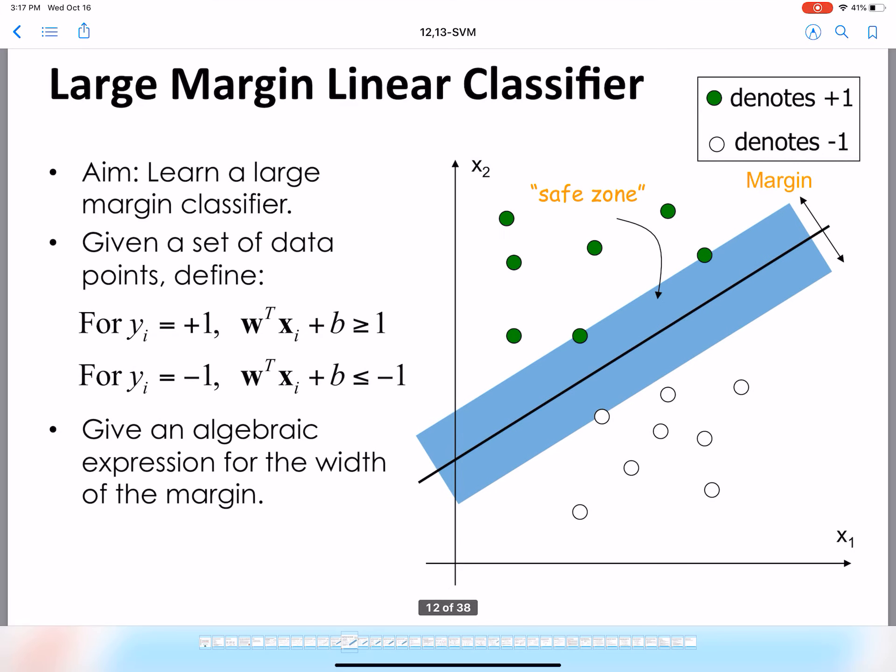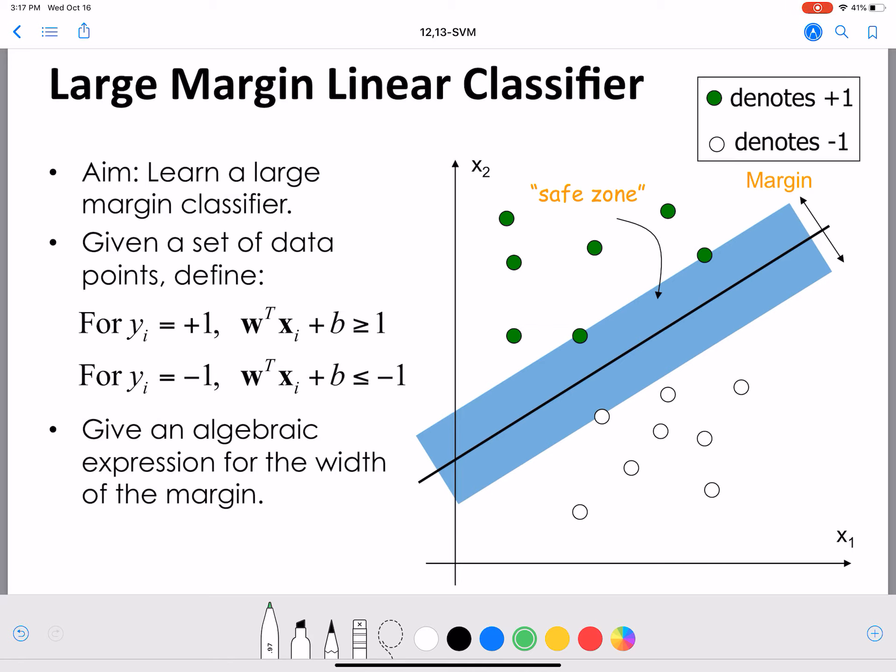Okay, so now formally defining this, we have two sets of points. And here we are going to retain our notation from neural networks, where for binary classes we have y value positive one or negative one.